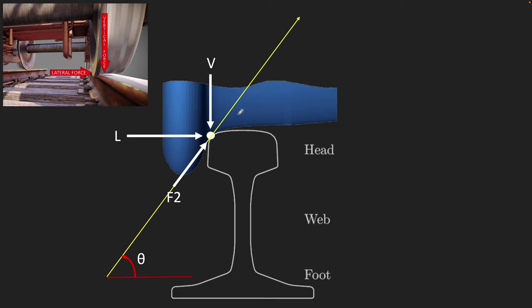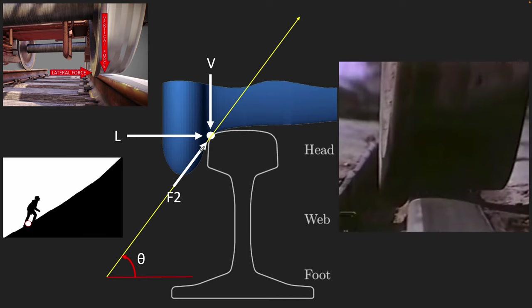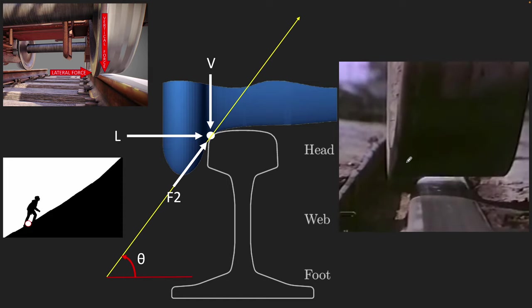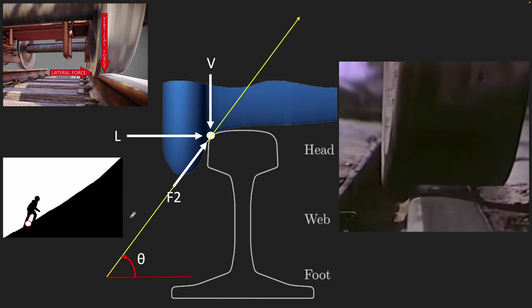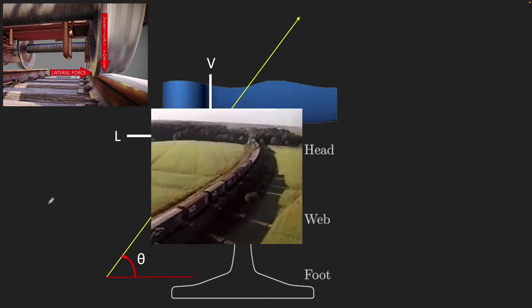When a wheel is in contact with the rail, it is not a horizontal plane, but actually at a certain angle. And that angle is theta. The force with which the wheel is constantly trying to climb the rail, let's call it F2. If you look at the video here, the wheel is constantly trying to climb the rail. It's kind of like a person climbing a steep hill.